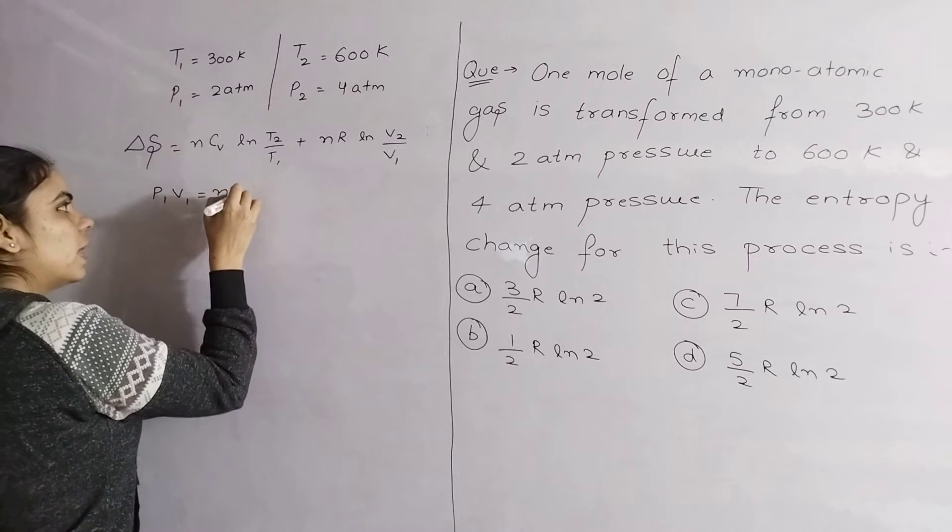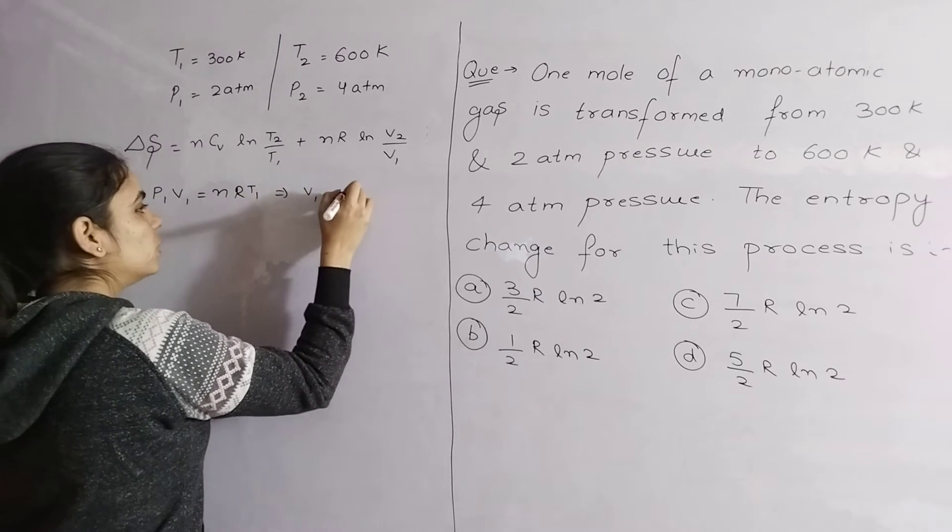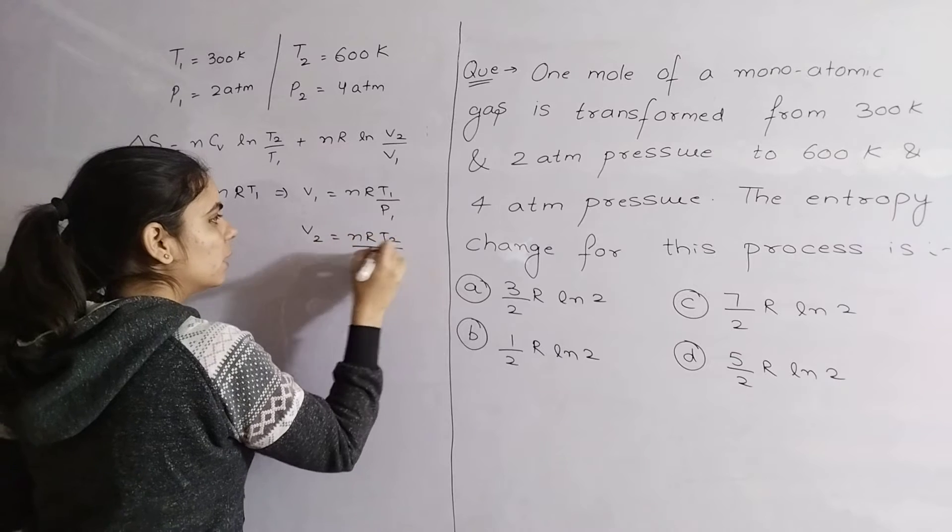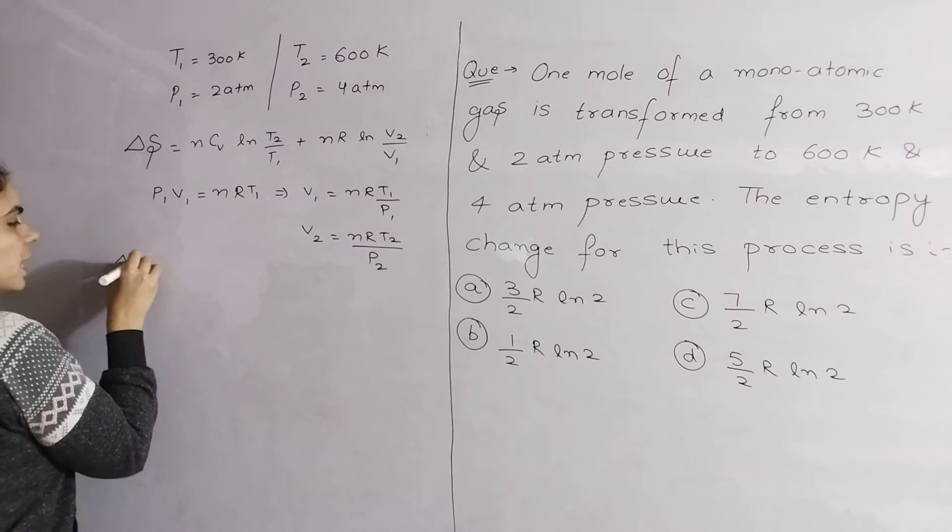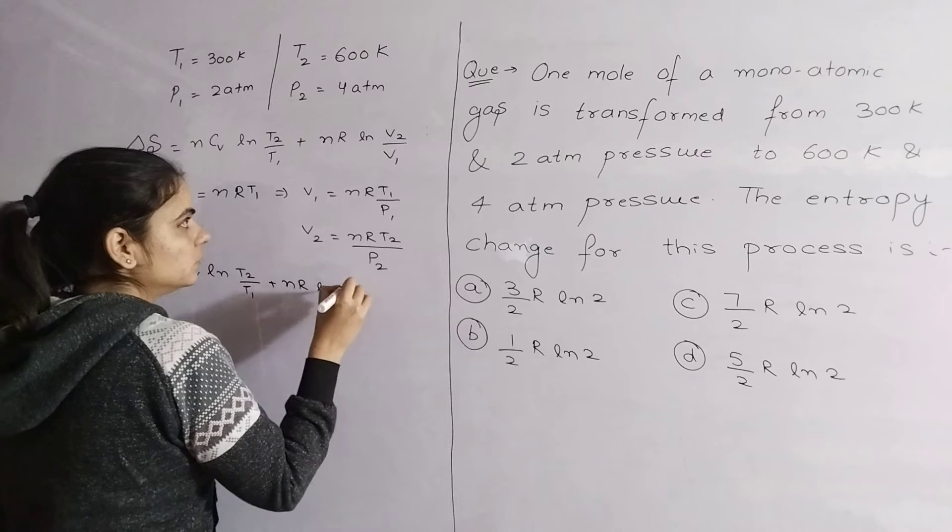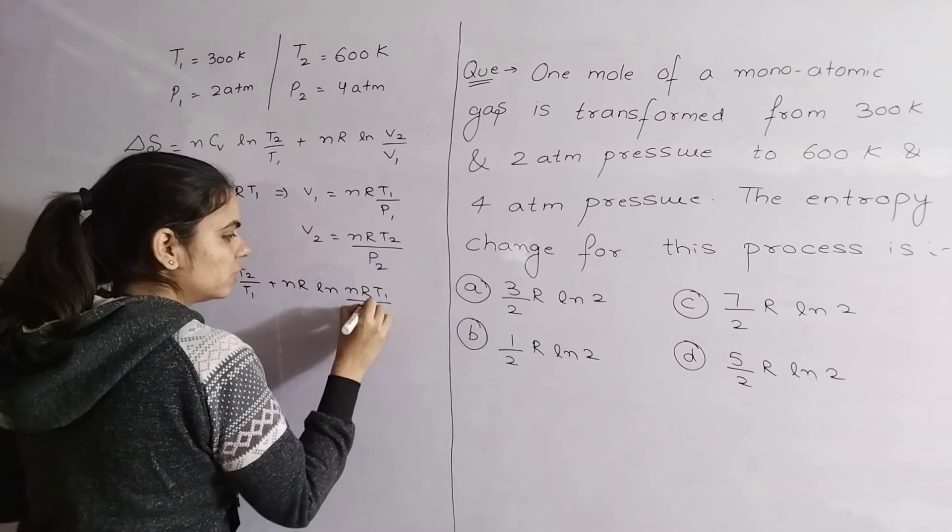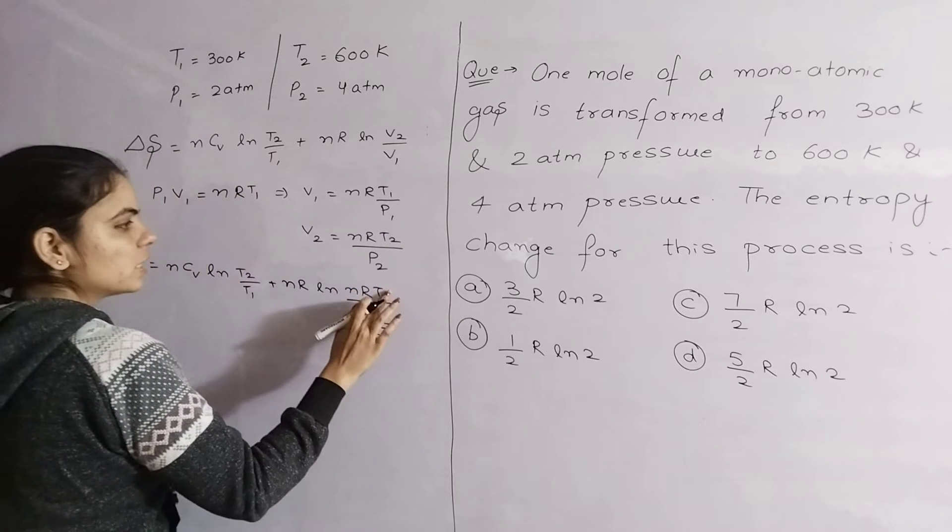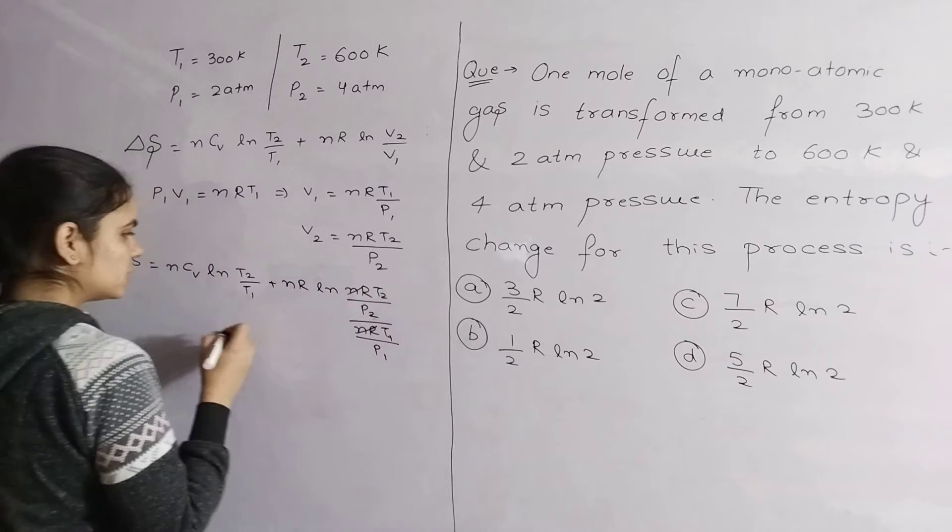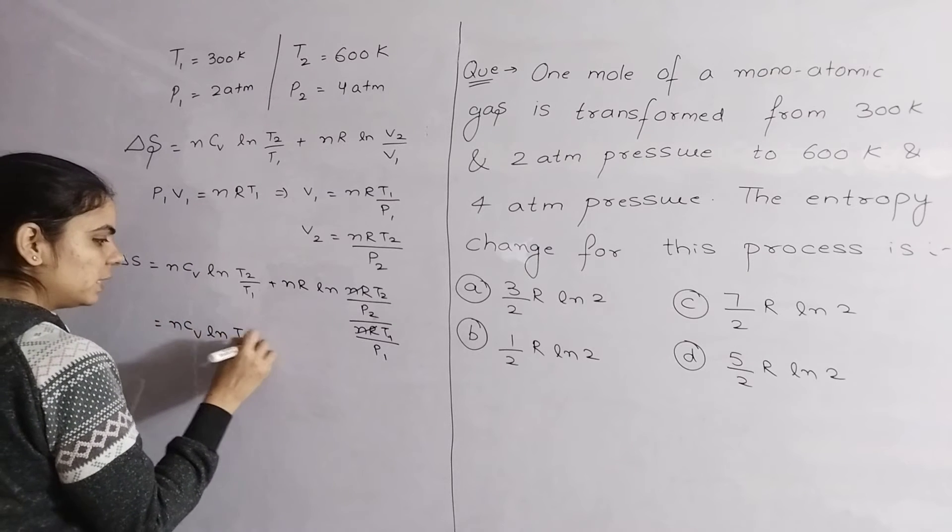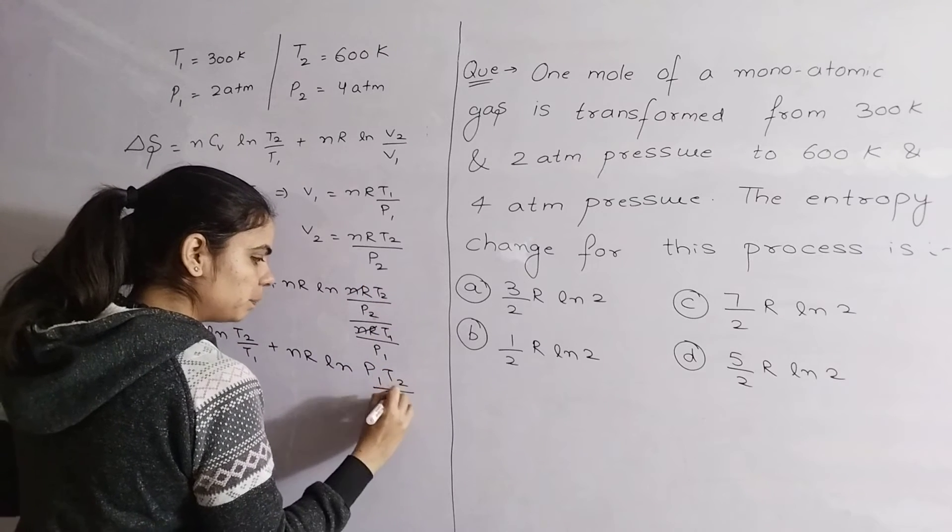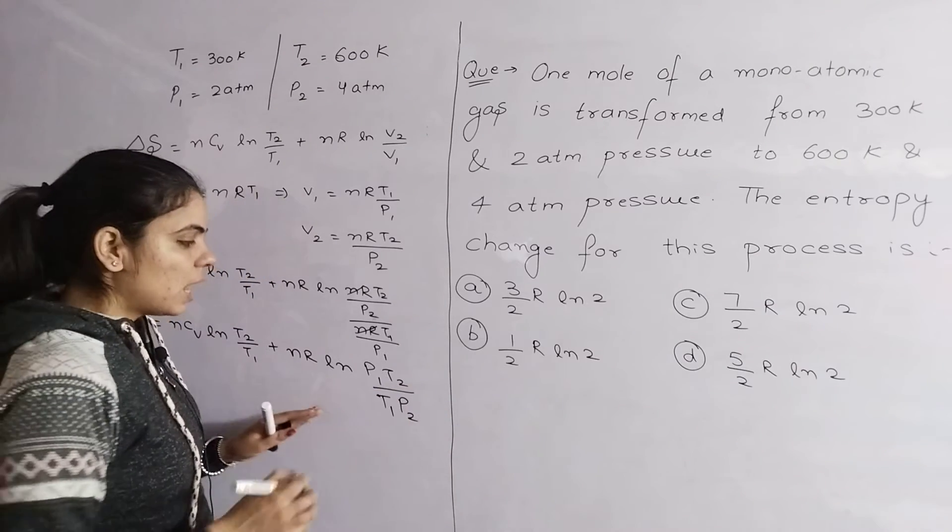Let's see what happens. P1V1 equals NRT1, so V1 equals NRT1/P1, and then V2 equals NRT2/P2. So delta S will be equal to NCV ln(T2/T1) plus NR ln(NRT2/P2 divided by NRT1/P1). Now see, NR cancels, what are we left with? NCV ln(T2/T1) plus NR ln(T2/T1 × P1/P2).